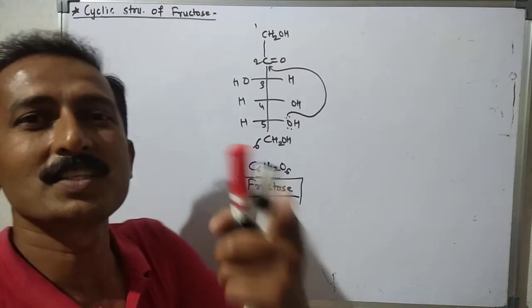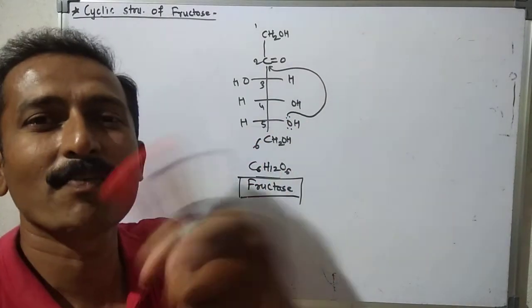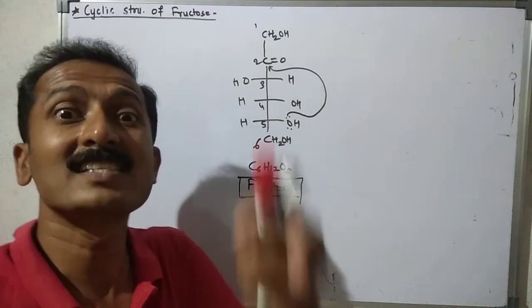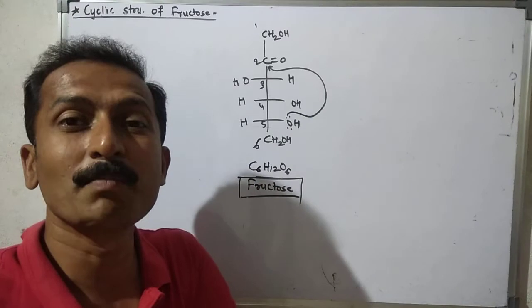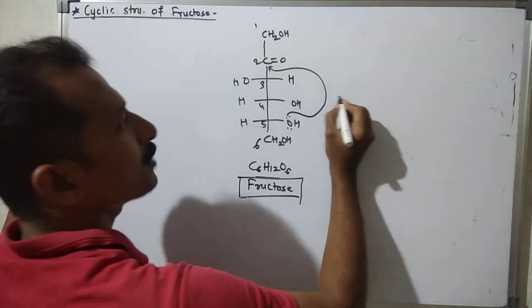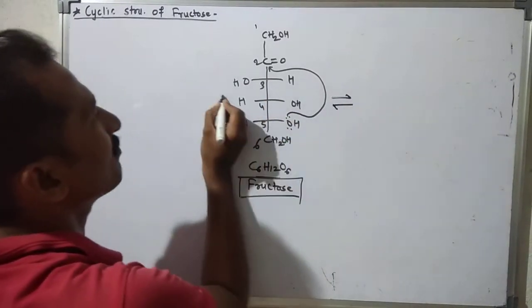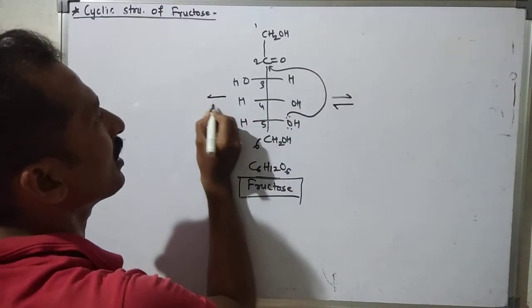So fructose forms a five-membered ring, unlike glucose which forms a six-membered ring. This gives two structures — alpha and beta.